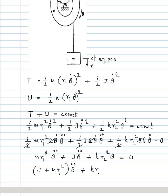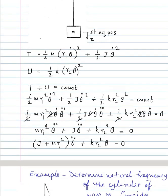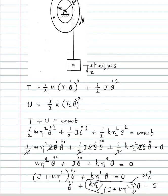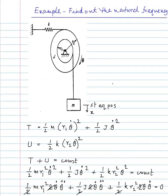This gives m r1 squared theta-double-dot plus J theta-double-dot plus k r2 squared theta equals zero, or (J plus m r1 squared) theta-double-dot plus k r2 squared theta equals zero. Rearranging: theta-double-dot plus [k r2 squared divided by (J plus m r1 squared)] theta equals zero. So the natural frequency omega-n squared equals k r2 squared divided by (J plus m r1 squared).